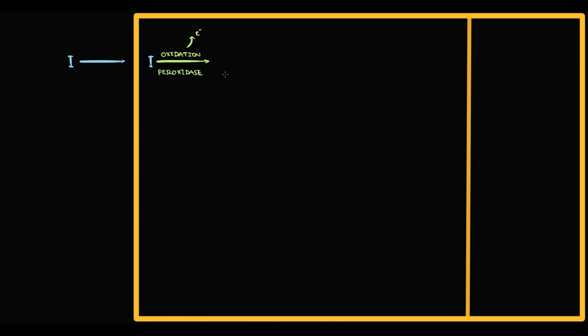The major concept is that to produce thyroid hormones, the thyroid gland requires a lot of iodine. Initially, follicular cells of the thyroid gland take up inorganic iodine. Inside the follicular cells, inorganic iodine undergoes oxidation by a specific enzyme called peroxidase, forming the oxidized form of iodine — we call it simply iodine.